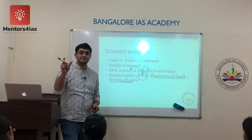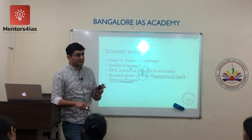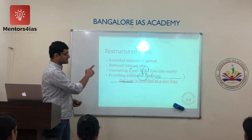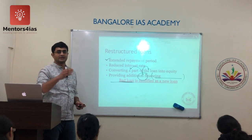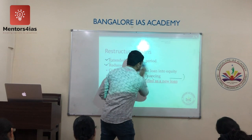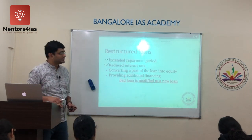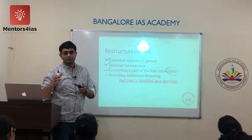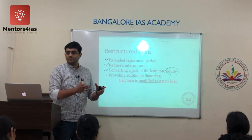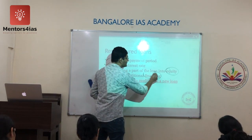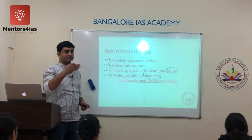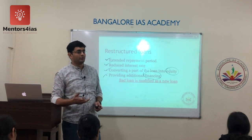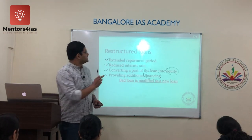Return of asset is when banks show the NPA being replaced by their profits in their accounts. For restructured loans, options include: extending the repayment period — say from 10 years to 15 years; reducing the interest rate — say from 10% to 6%; converting part of the loan into equity or shares to reduce the company's burden; or providing additional finance. These bad loans modified into new loans are called restructured loans.